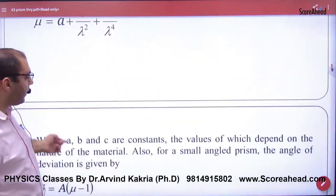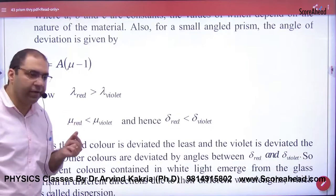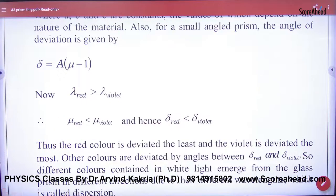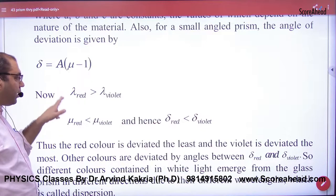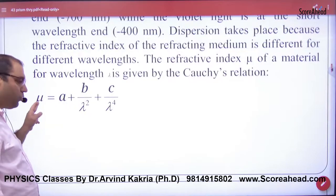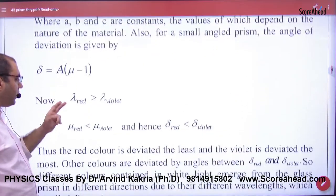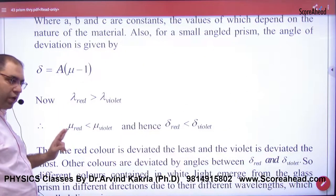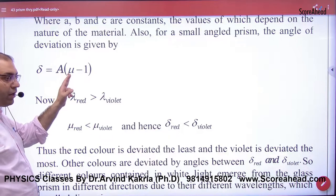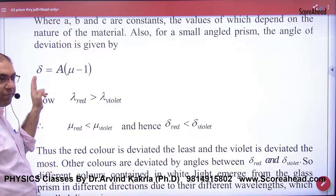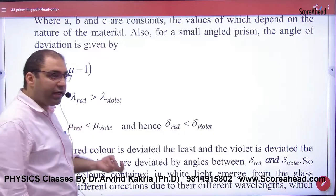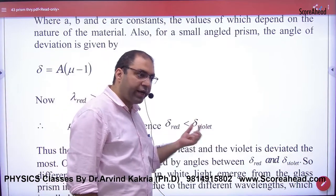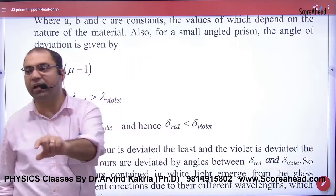If we talk about red light, red light has a greater wavelength compared to violet. So if lambda is greater, then mu is less. And if mu is less for red, then delta is less. And if mu is more for violet, then delta is more for violet. So this is why deviation is more for violet and less for red. Mathematically, this formula has proved it.